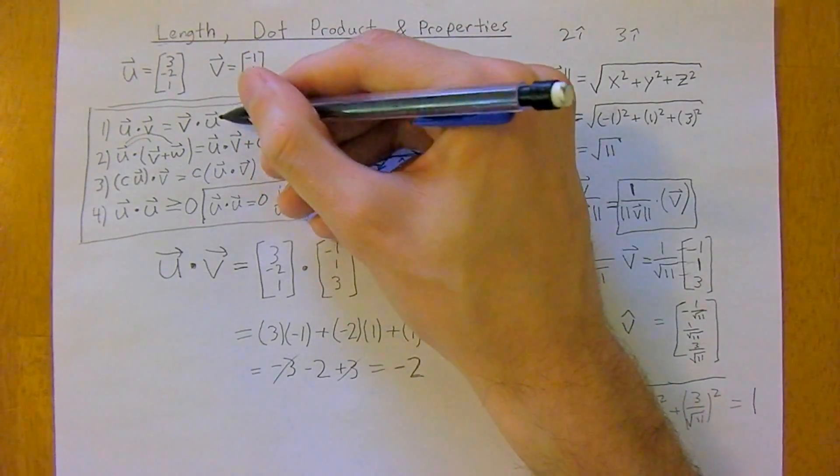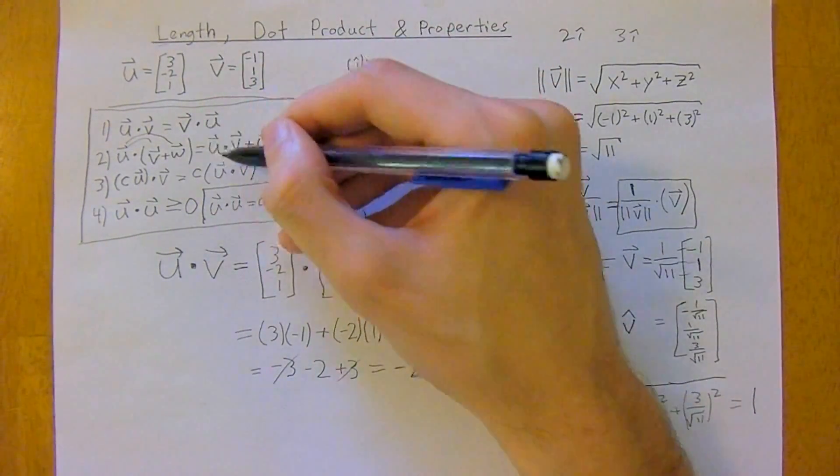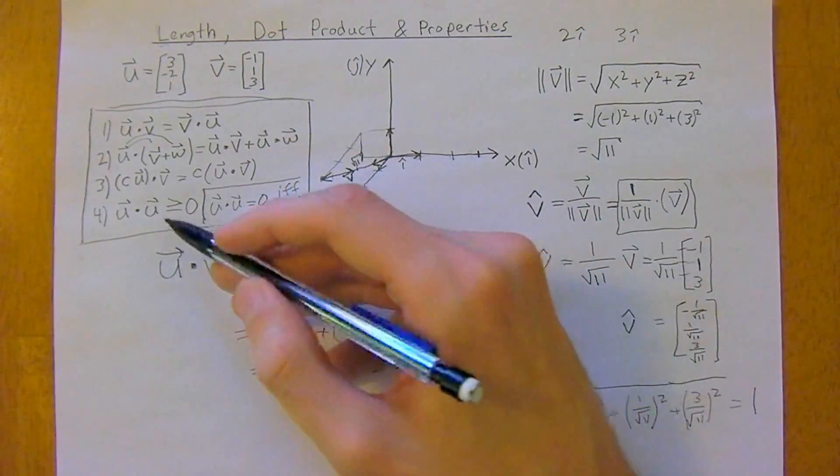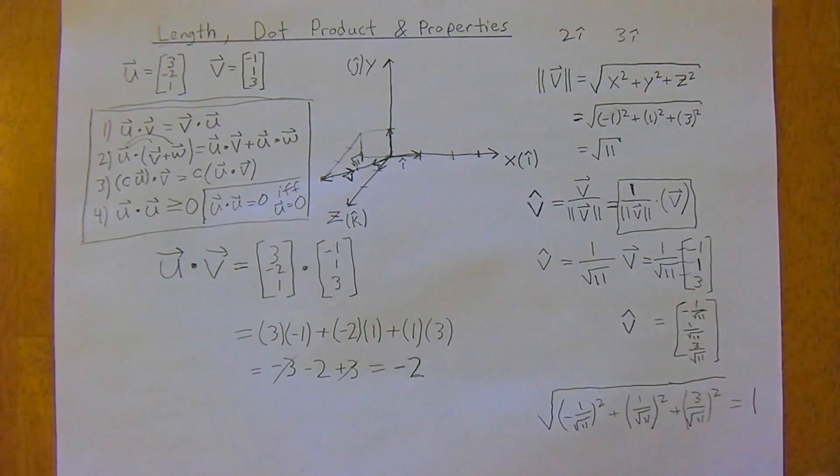So in this case, it's commutative. Here, it's just distributive. Here, we just bring the scalar out. And u dot u is greater than or equal to zero. I recommend doing some problems. It's pretty straightforward. Just plug in some numbers and you will see that.